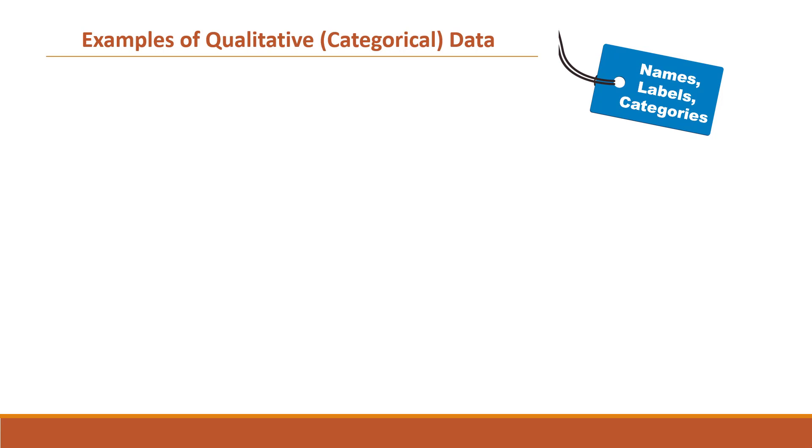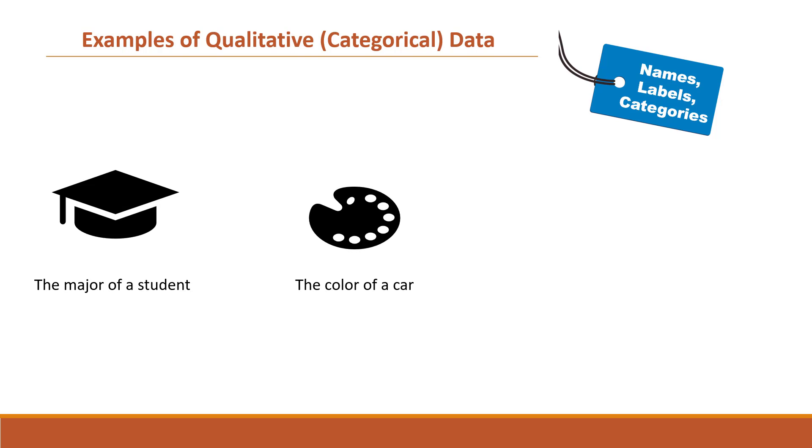Next, let's look at the examples of qualitative or categorical data. This data consists of names, labels, categories. The major of a student is an example of qualitative data. It consists of different major names. The color of a car is another example of qualitative data. The area code of a phone number also represents qualitative data.